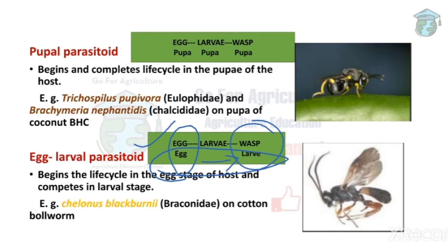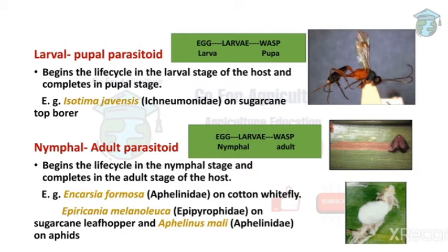Next is larval-pupal parasitoid — same concept as egg-larval. The wasp lays eggs when the host is in the larval stage, and the adult wasp emerges when the host is in the pupa stage. So it begins its life cycle in the larval stage and completes it in the pupal stage. Example: Isotima javensis on sugarcane top borer.